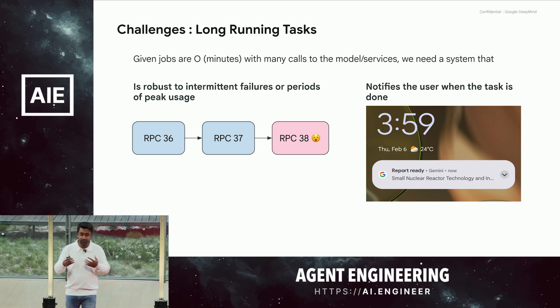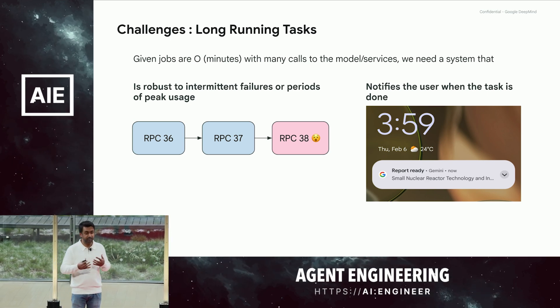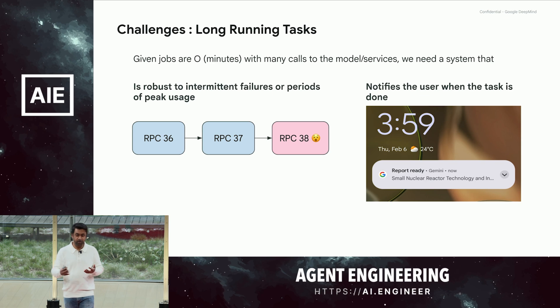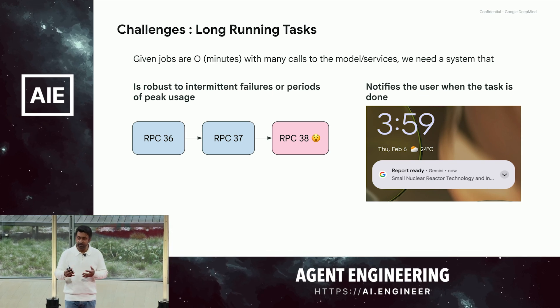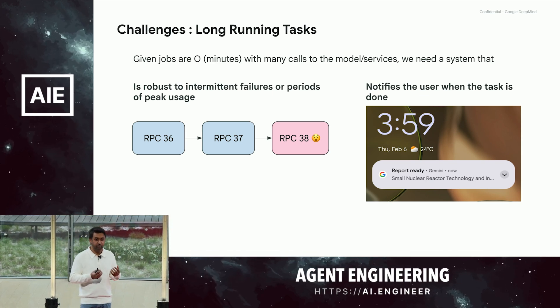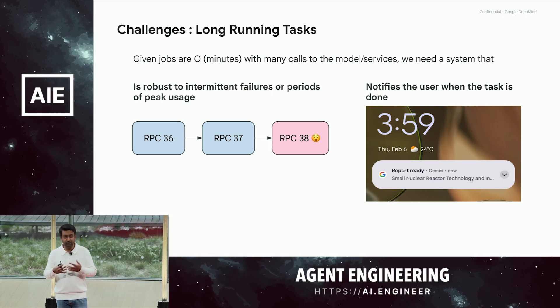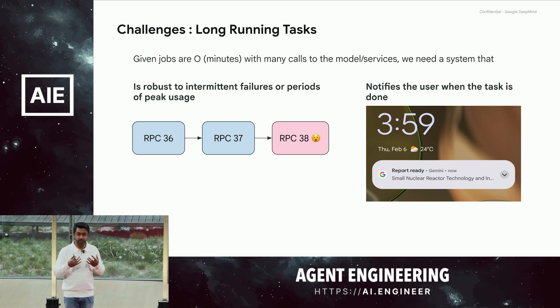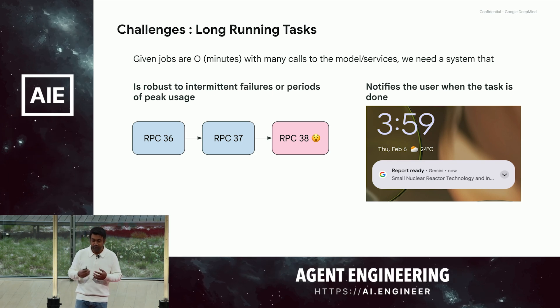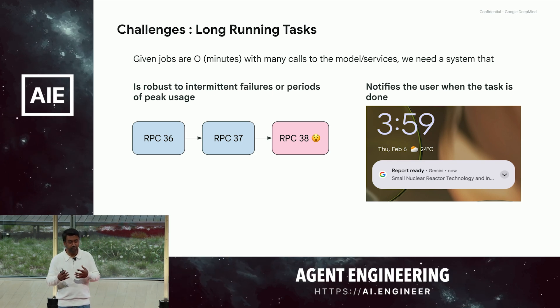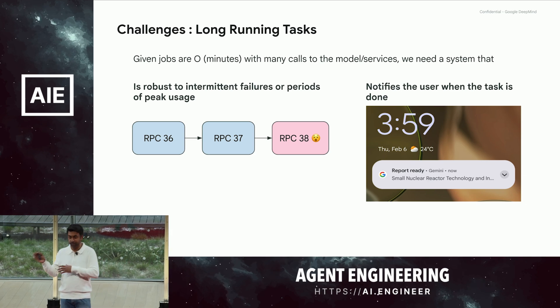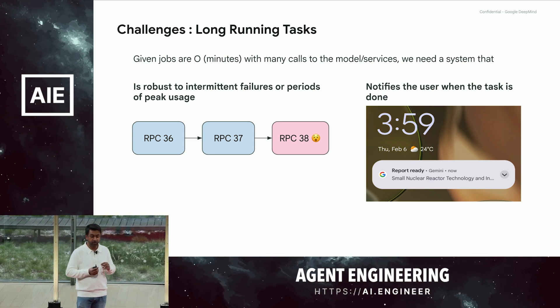If you think about a job that runs for multiple minutes and can make many different LLM calls and calls to different services, there are bound to be failures. Today we're talking about O of minutes, but you can easily think in the future of research agents taking multiple hours. So it's important to be robust to intermediate failures of various services. Being able to build a good state management solution and recover from errors effectively so that you don't drop the whole research task due to one failure — that's one challenge.